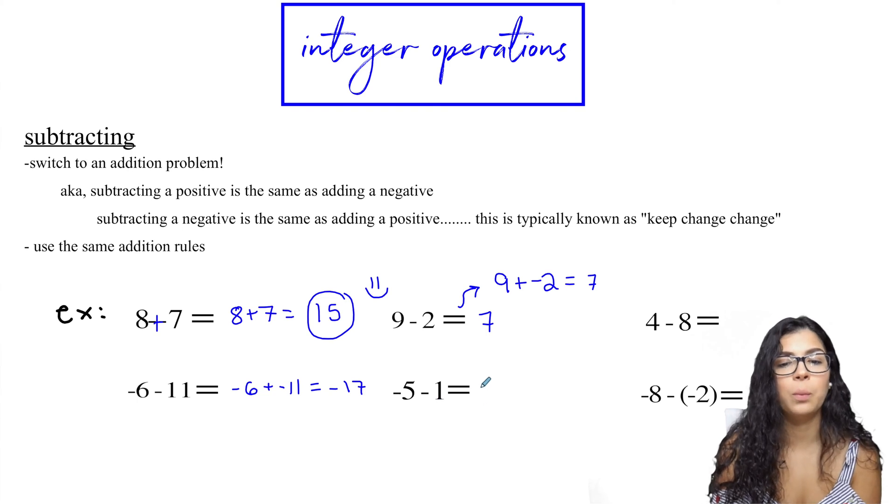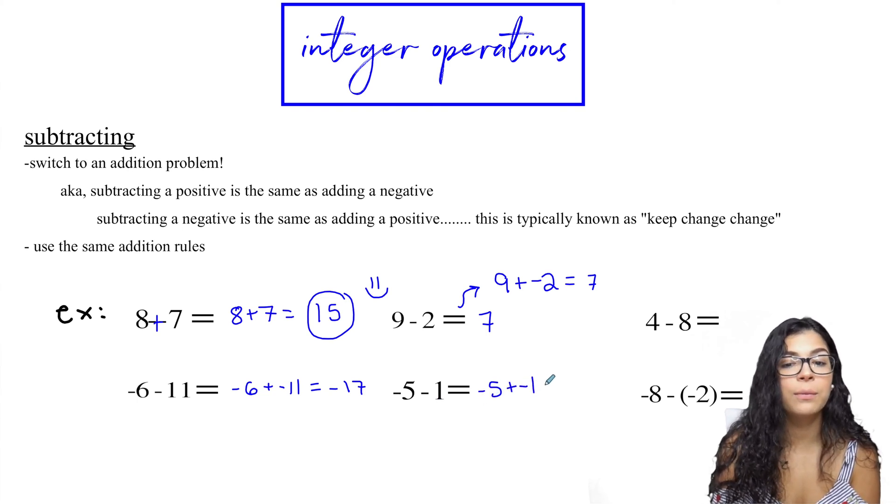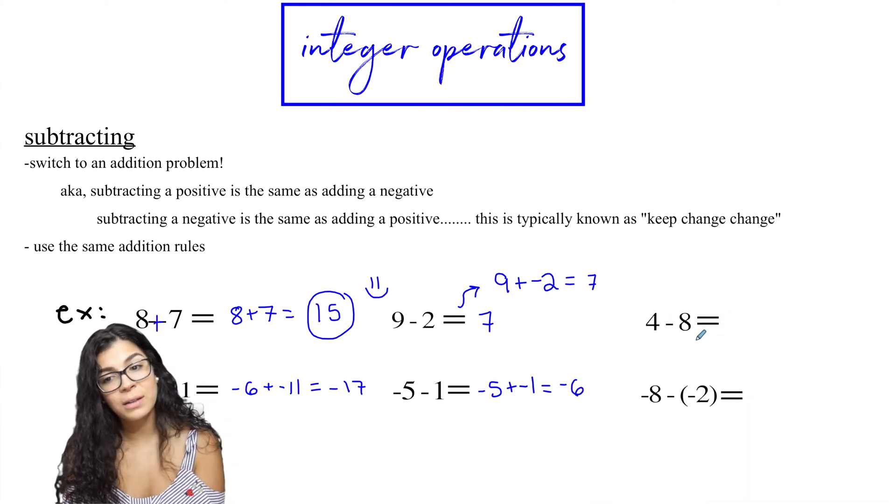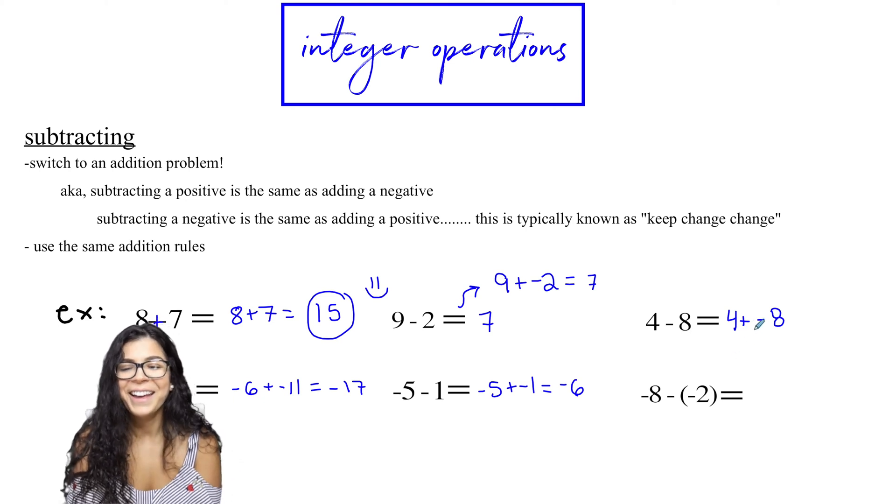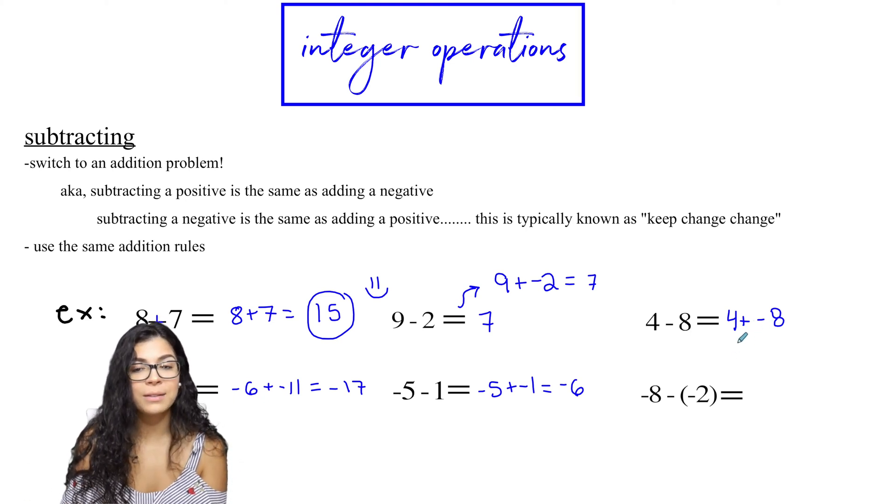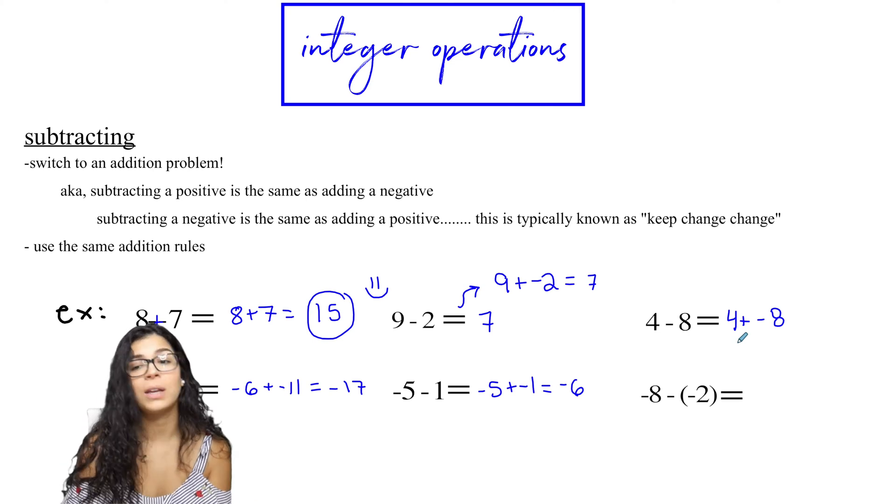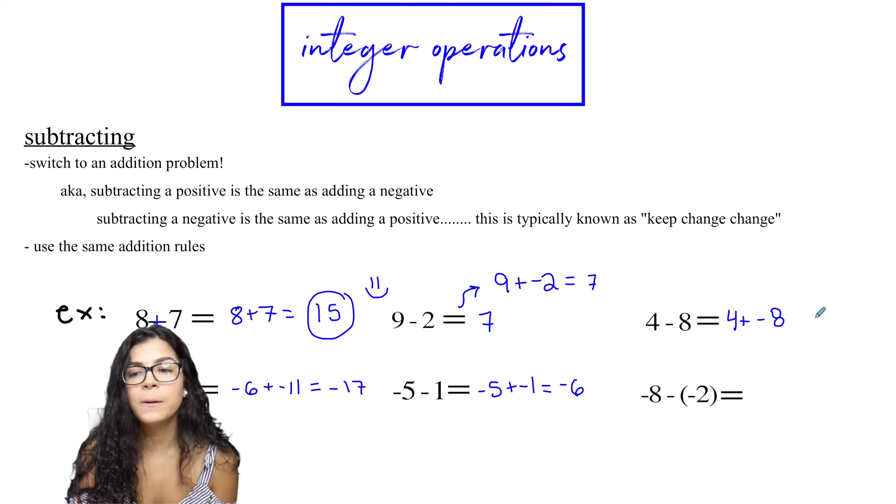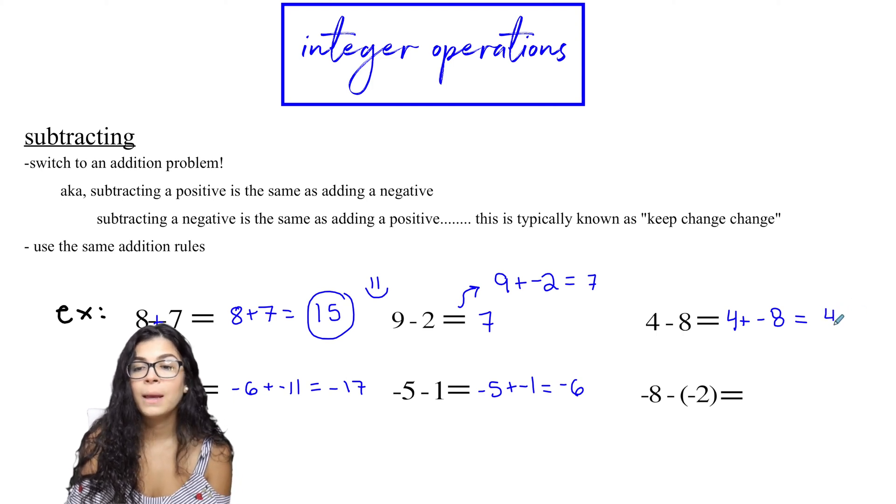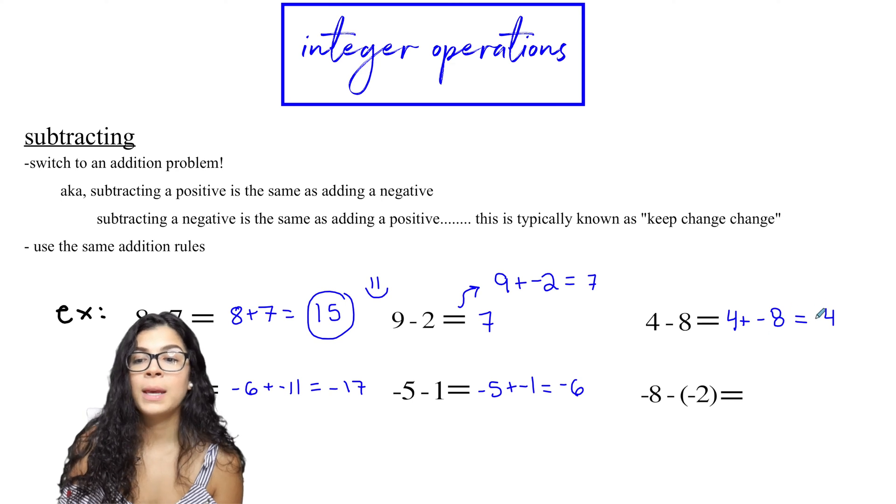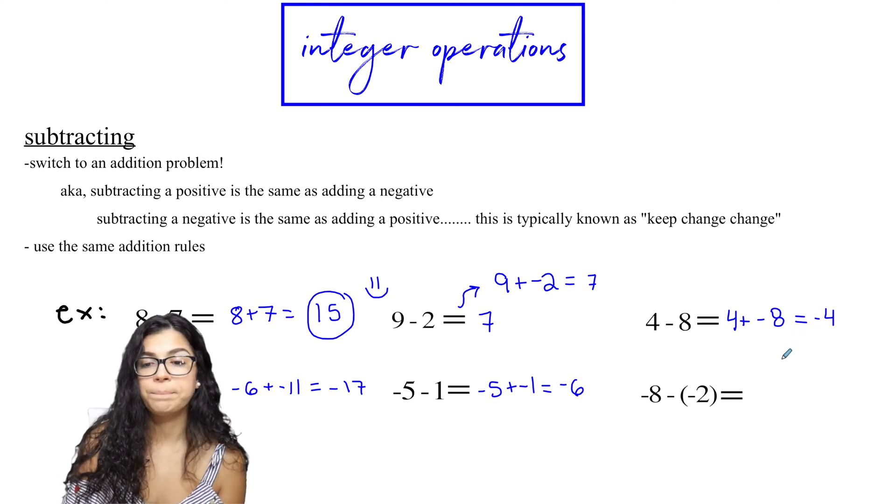Okay. Negative five minus one. So negative five plus negative one, which is negative six. Then four minus eight is the same thing as four plus negative eight. So you have subtracting a positive eight is the same thing as adding a negative eight. So we have different signs here. And so we're going to take the difference. Eight and four is four and the eight is bigger than the four. So this will be a negative four as an answer.